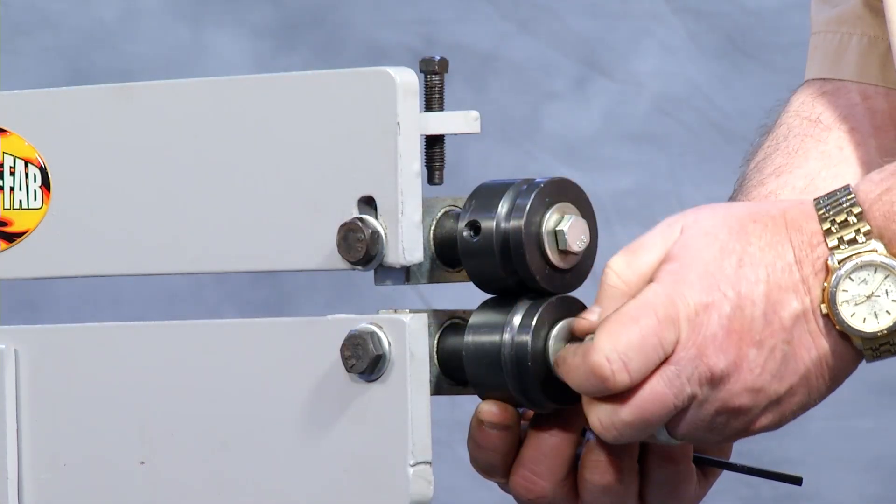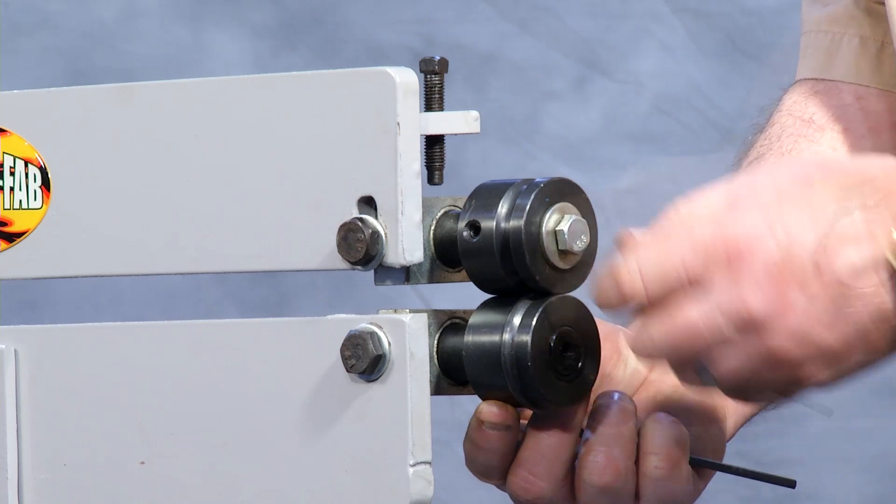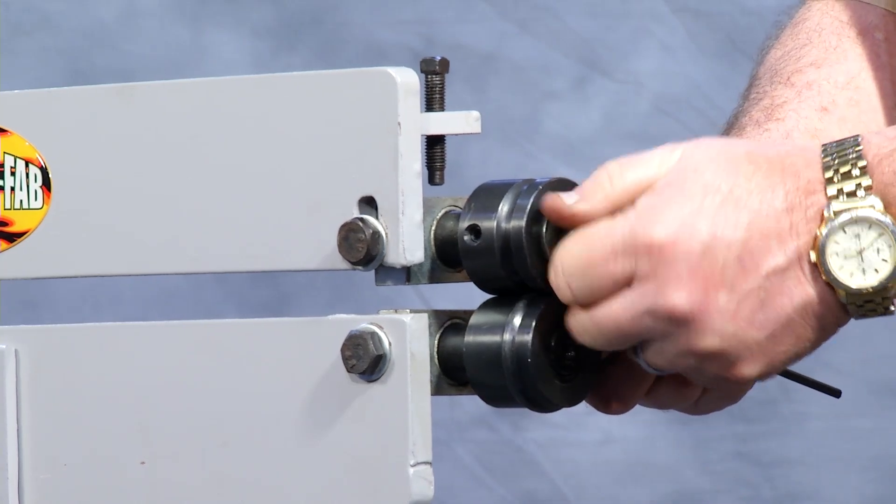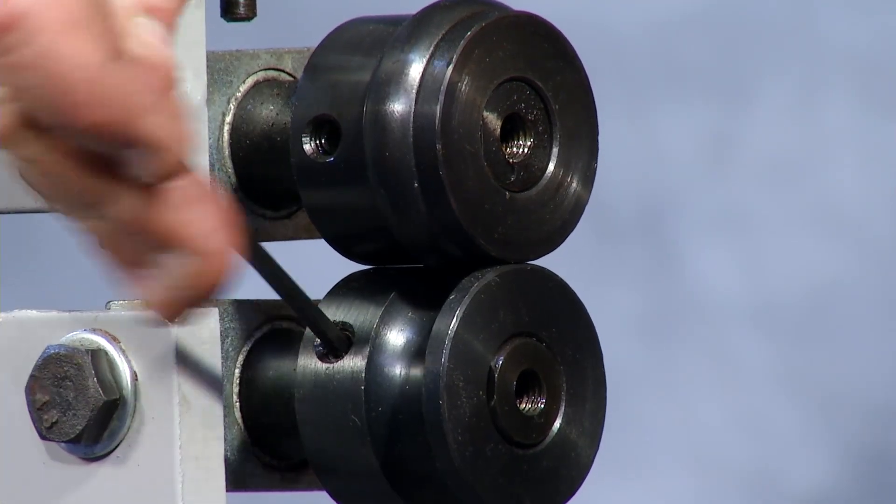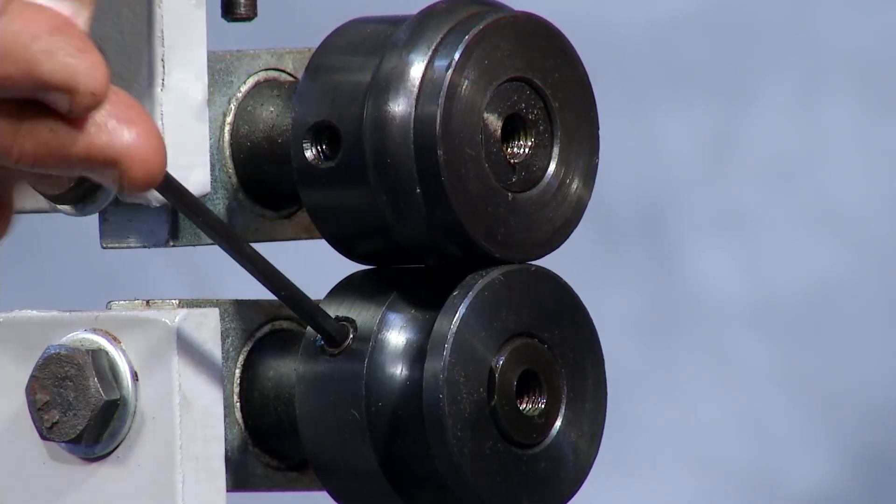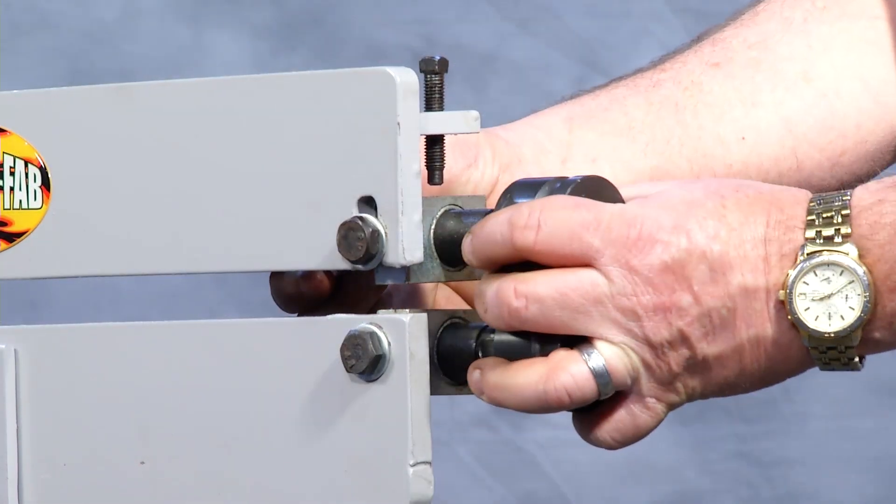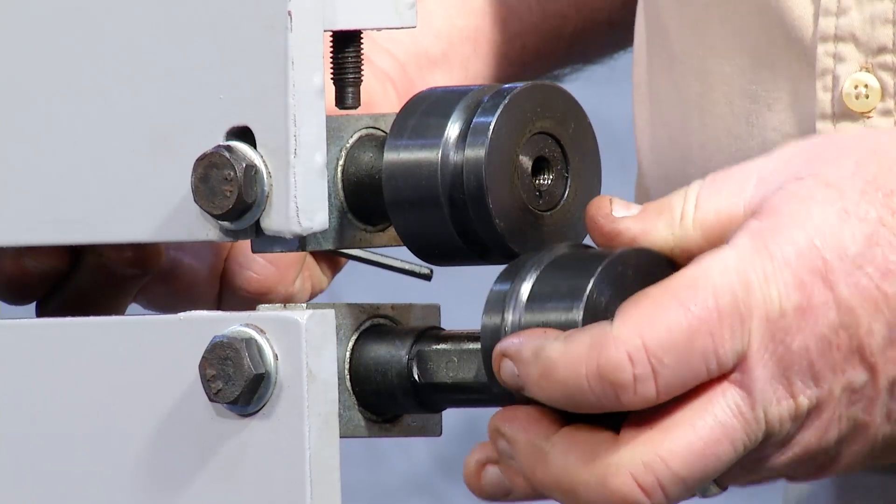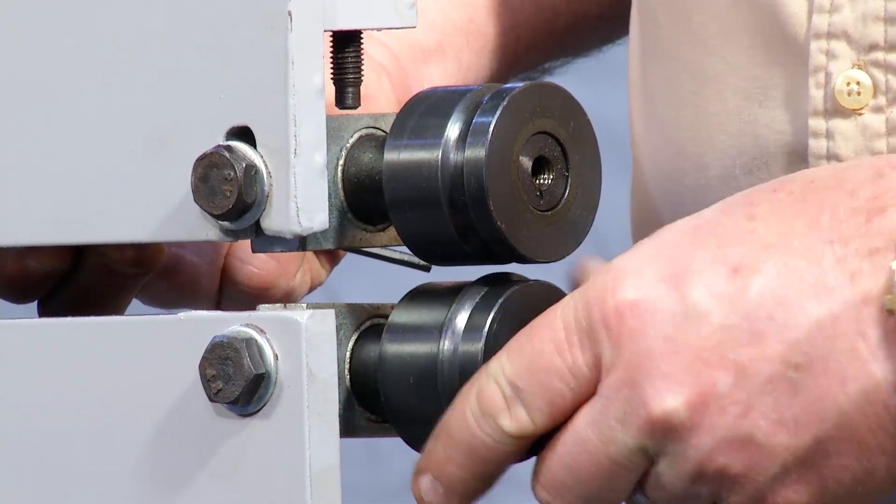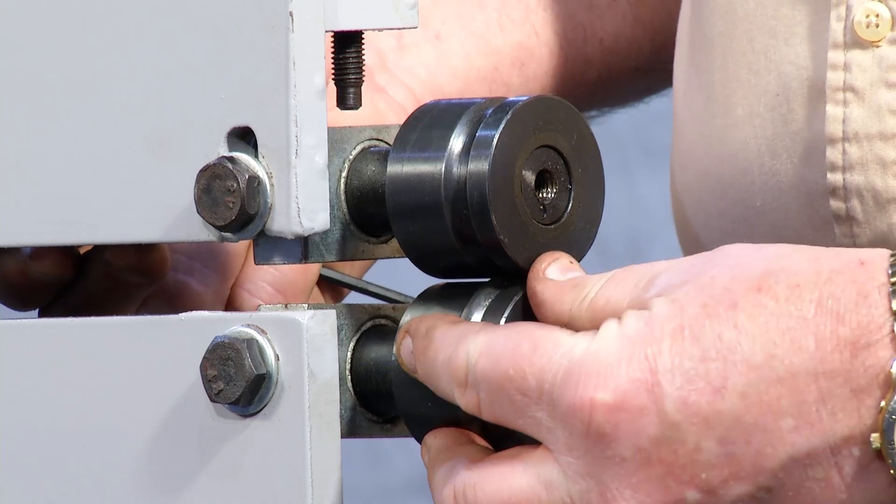In order to change the dies, we remove the two bolts located on the ends of the shafts. After removal of the bolts, we loosen one set screw on each roll. Now the rollers will slide off the end of the shaft and can be replaced with a different set of dies. All of this can be done in just a few minutes.